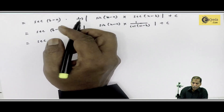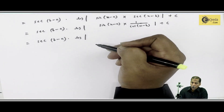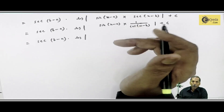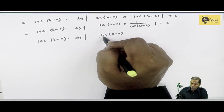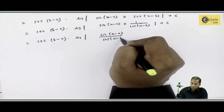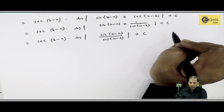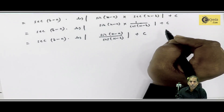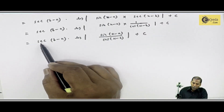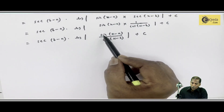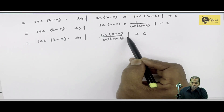So it is equal to sec(b minus a) into log mod. Now sin upon cos gives us sin(x minus a) upon cos(x minus b), plus c. So our question was integral of 1dx upon sin(x minus a) into cos(x minus b), and the answer is sec(b minus a) into log mod sin(x minus a) upon cos(x minus b), mod complete, plus c.